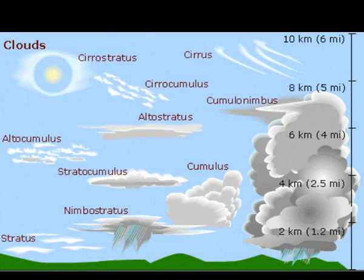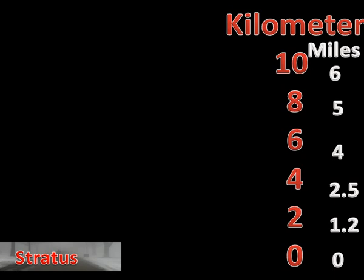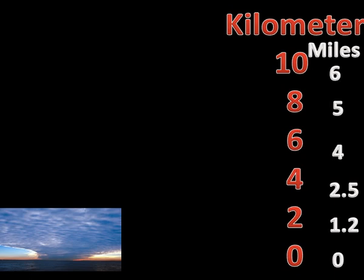We can name all but two of these cloud types with the pairs of words we have talked about, then name the last two using only one more word. First, we will name the Stratus clouds. These clouds often touch the ground and are called fog, but they can reach a height of two kilometers. They blanket the sky and are called Stratus.